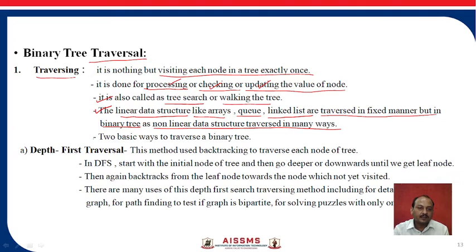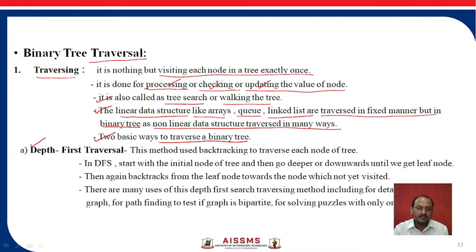There are two basic ways to traverse a binary tree for processing, checking, and updating. The first method is the Depth First Traversal, which uses backtracking to traverse each node of the tree.